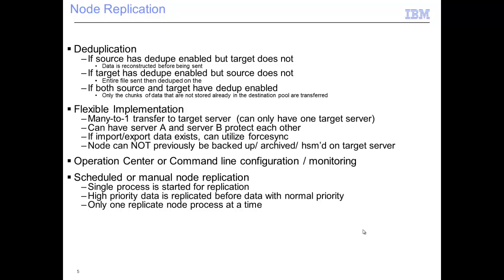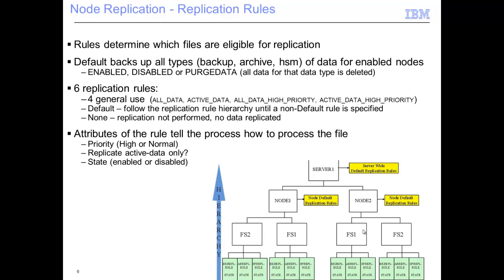Node replication can either be scheduled or done as an on-demand request. Rules determine what is replicated first: you decide what is enabled — backup, archive, or HSM data — and whether it's for a specific node. Under the replication rules, you can choose whether to replicate all data or only active data, and assign high or normal priority. You can set attributes telling how to process a file: process it normally, process it as high level, process only the active data, or you can turn node replication on or off for a specific node, making it enabled or disabled.